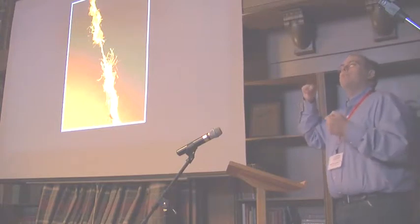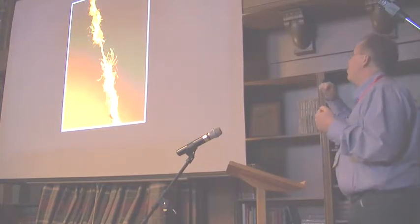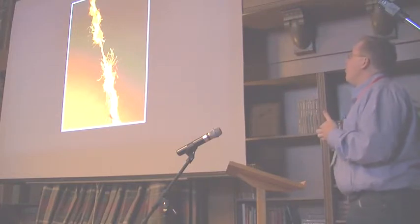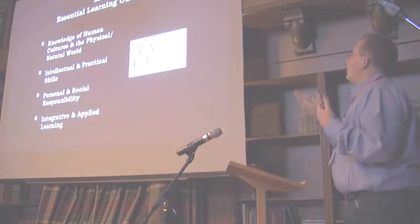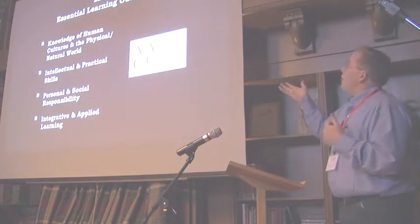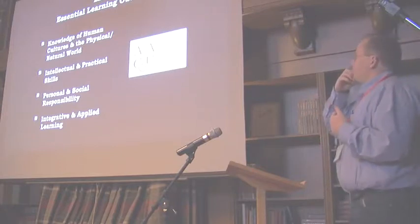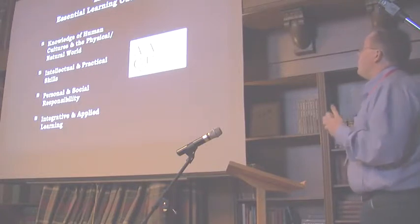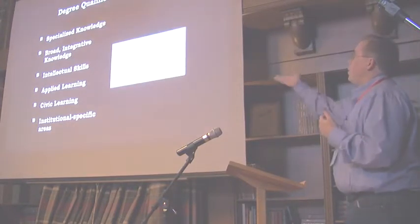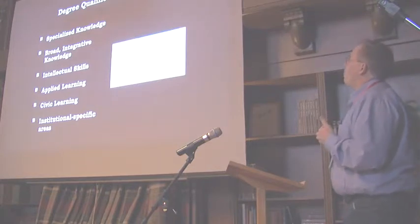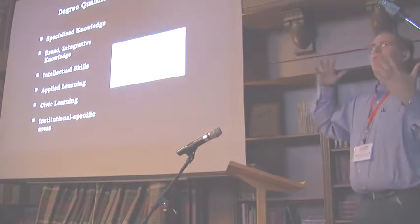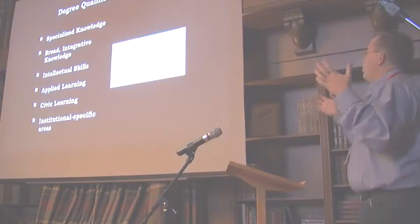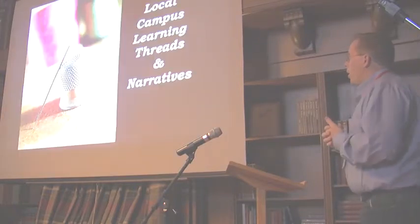We want to start building these narratives so they're connecting with our patrons, our stakeholders, and our communities. There are a lot of national learning narratives going on right now. Through the AACU, there are the Essential Learning Outcomes — competencies and skills for graduates. The Lumina Foundation has the Degree Qualifications Profile. If you look at the skills they're asking for, they're really similar: a knowledge component, civic learning, lifelong learning, and a critical thinking component.